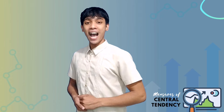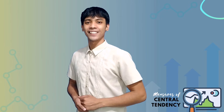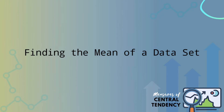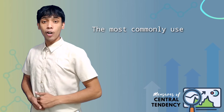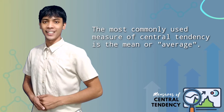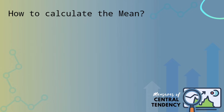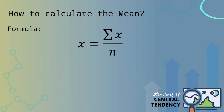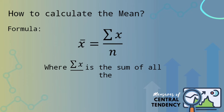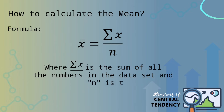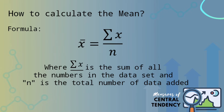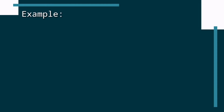Now, let's talk about how to find the mean of a data set. The mean is the commonly used measure of central tendency. In simple terms, we call it average. The mean of the data set is denoted by the symbol x-bar, and the formula is x-bar equals the summation of x divided by n, wherein summation of x is the sum of all the numbers in a data set, and n is the total number of data you have added.